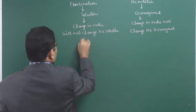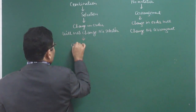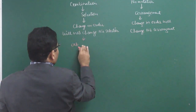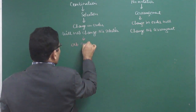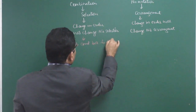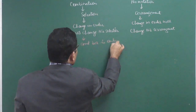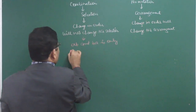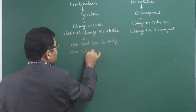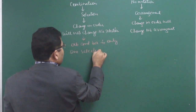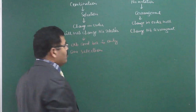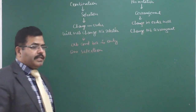For example, AB and BA is only one selection. AB and BA are only one selection.